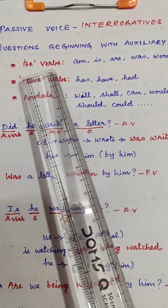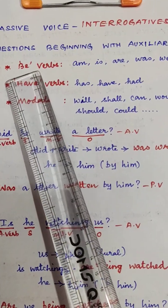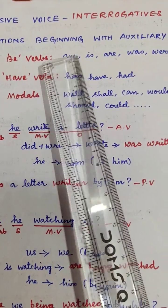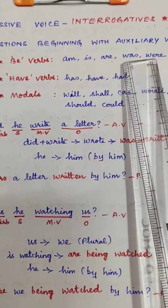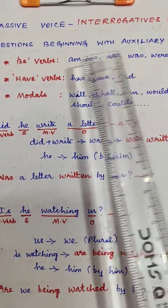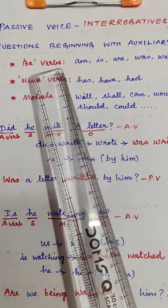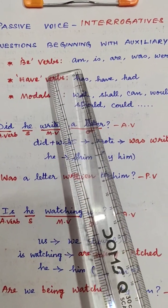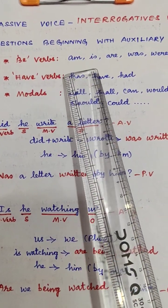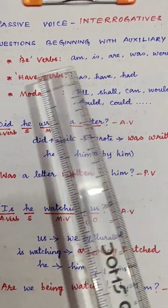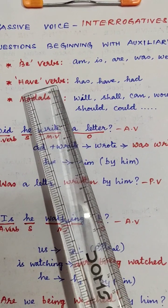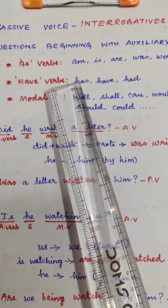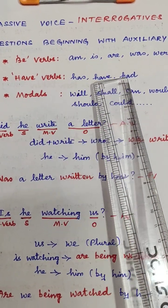Be verbs: am, is, are, was, were. Do verbs: do, does, did. Have verbs: has, have, had.